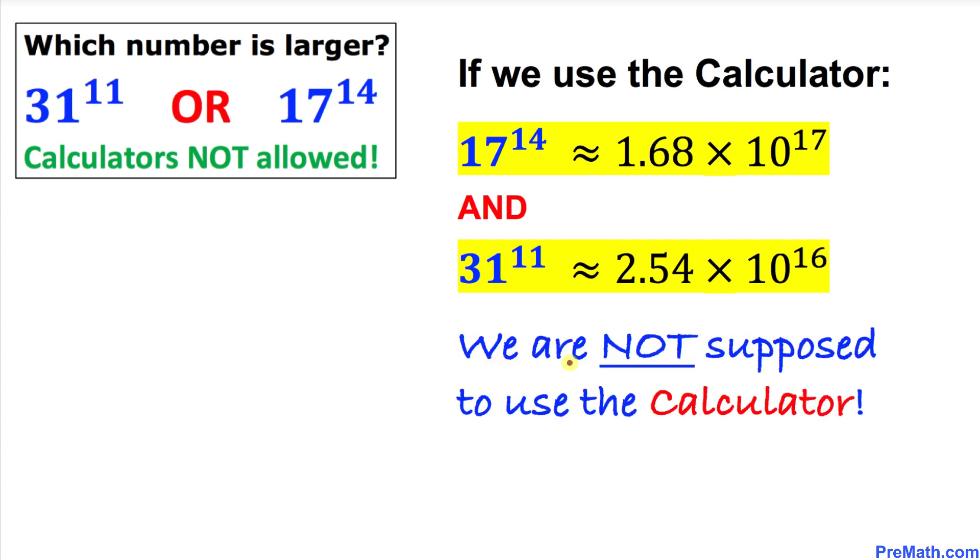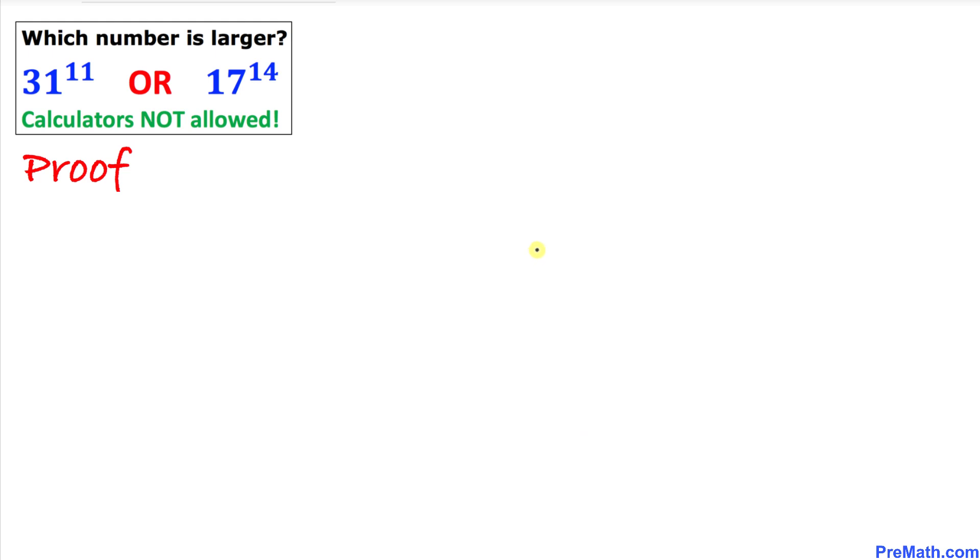However, we are not supposed to use calculators, so let's get started with the proof. Let's focus on this number 31^11. In this proof we are going to use some manipulation to come up with our answer. Now we can write that 31, the base, is less than 32.